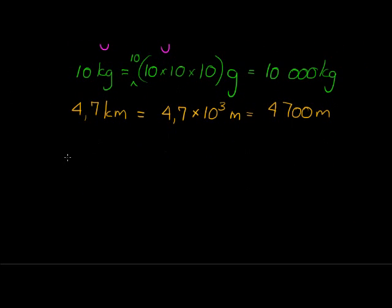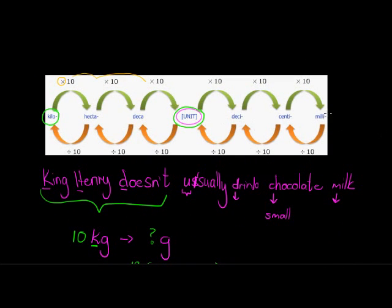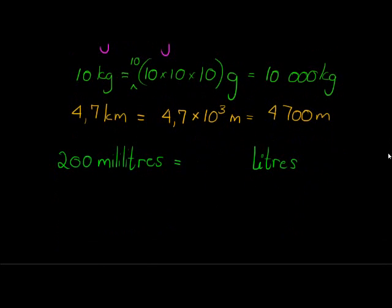Let's do the opposite way around. Let's say I have 200 milliliters and I want to just get to liters. What do I have to do? This time I want to go from milli to liters. That means I'm going to have to divide with 10 three times. So it's going to be 200 divided by 10, divided by 10, divided by 10.